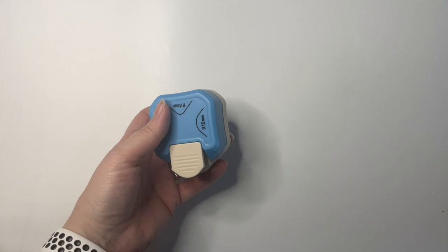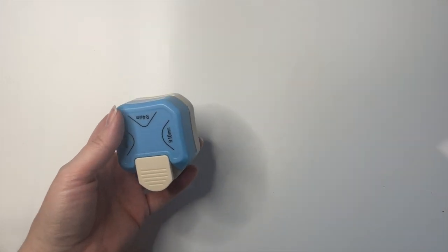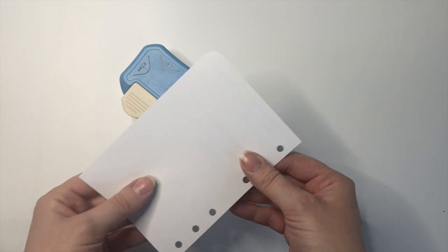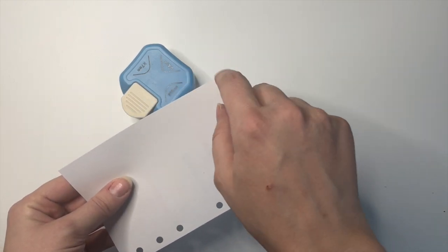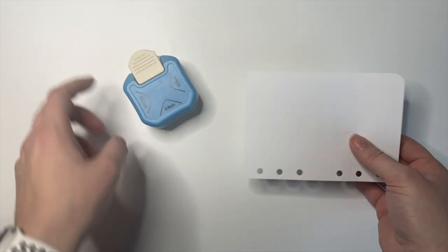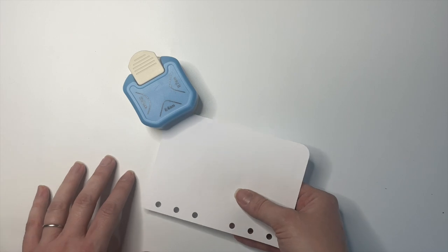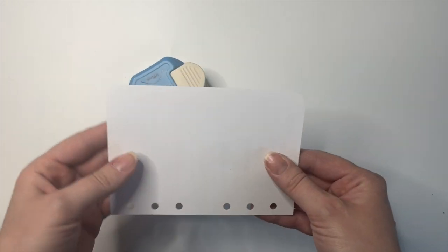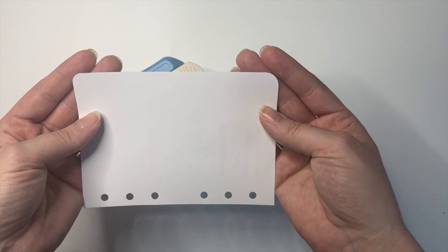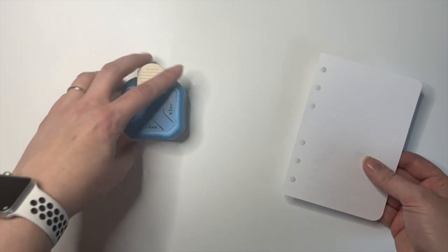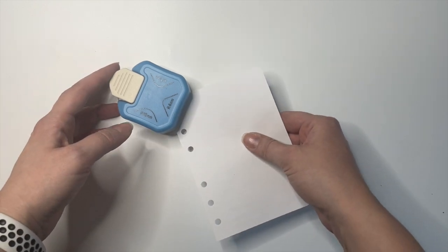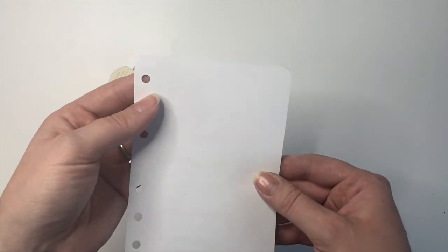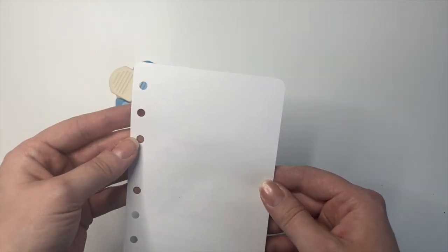This is a corner punch and some people will punch their planner inserts to round the corners. I don't do that because I'm too lazy, but I do punch journaling cards that I make or that I receive. And this one has three different sizes that it will punch. So I'll just kind of show you, there's a guide in here that kind of takes out the guesswork. The 10 millimeter one is like a larger radius.